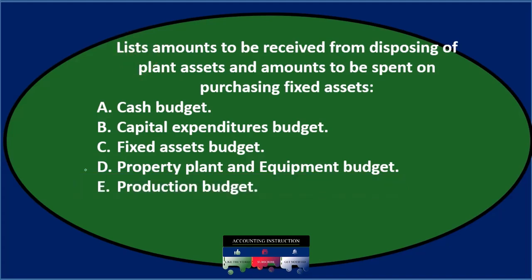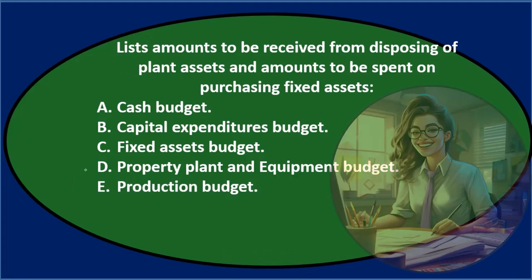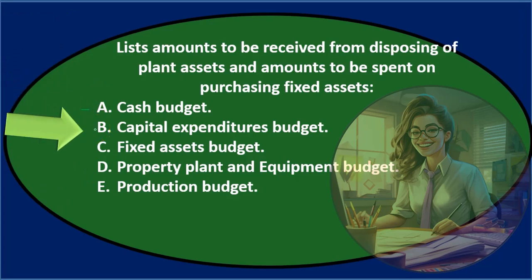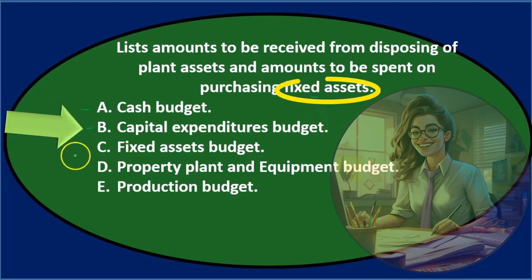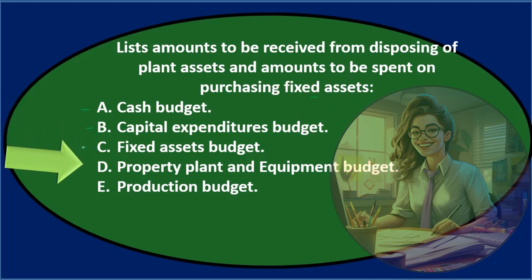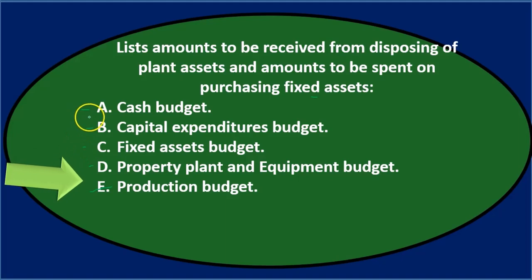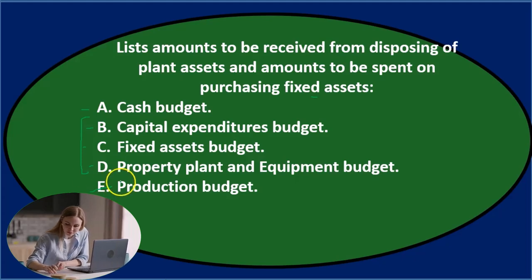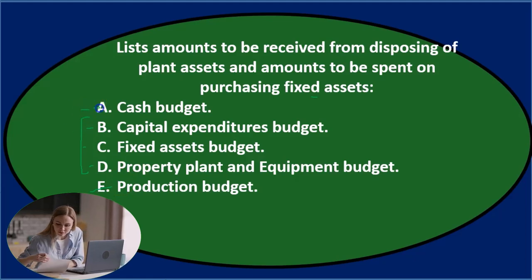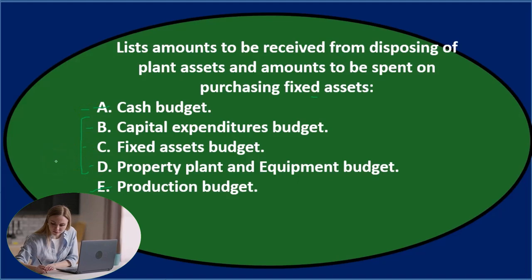Lists amounts to be received from disposing of plant assets and amounts to be spent on purchasing fixed assets. A: Cash budget — it might deal with cash, so maybe we keep that. B: Capital expenditures budget — that sounds familiar, so I'll keep that. C: Fixed assets budget — we have fixed assets mentioned, so I'll keep that. D: Property, plant and equipment budget — plant assets, property, plant and equipment — I'll keep that. E: Production budget — I don't think it's E, I can eliminate that. Now, of these remaining options, capital expenditures, fixed assets, and property, plant and equipment all kind of sound like the same thing.